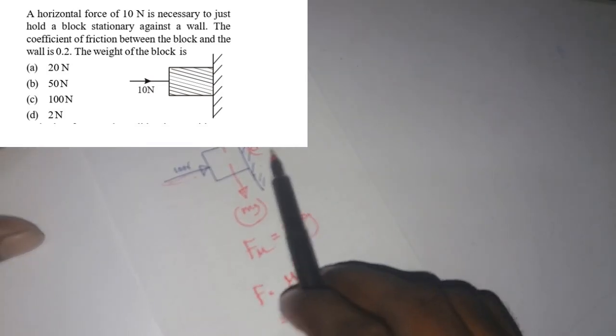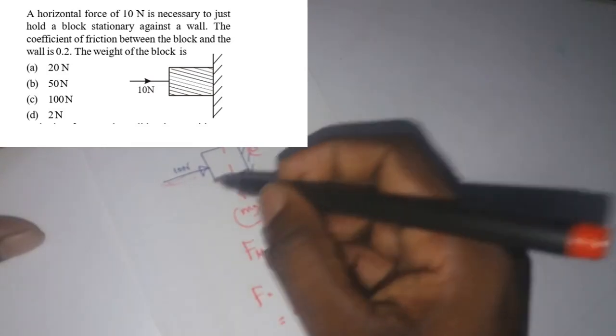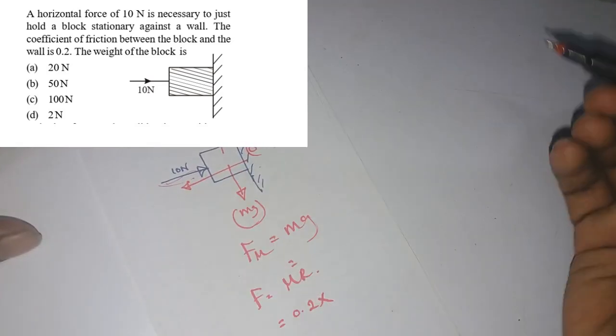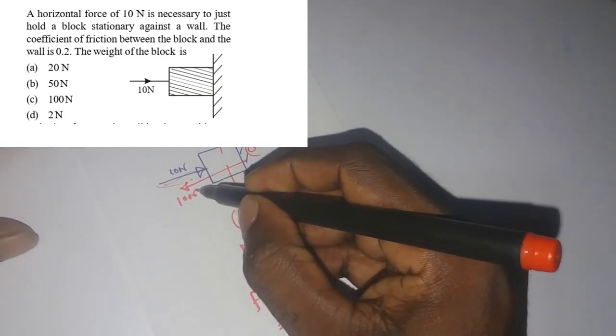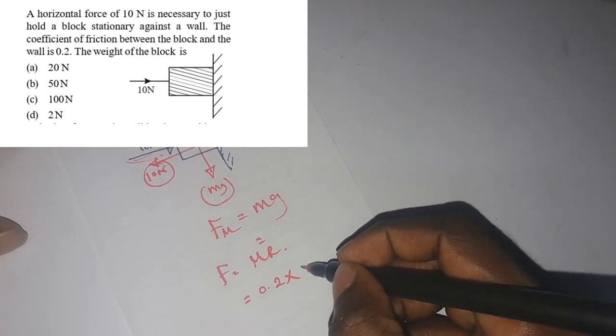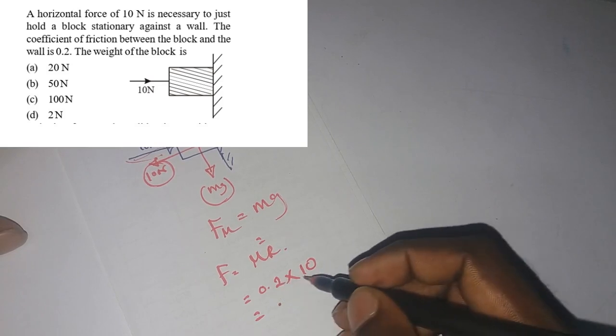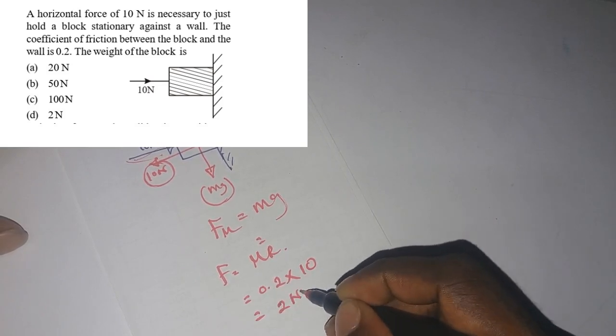So this is the normal reaction force. So normal reaction force will be 10 newton in opposite direction. So let's multiply it by 10, so the frictional force will be 0.2 into 10, 2 newtons.